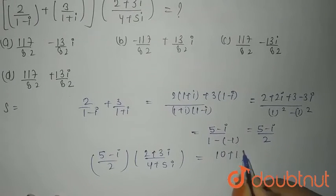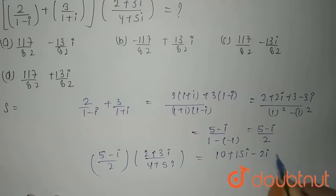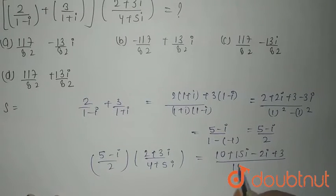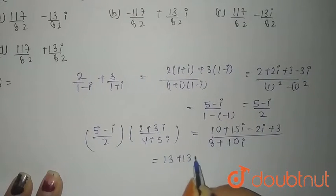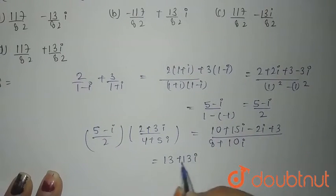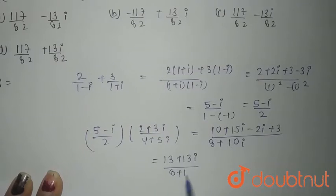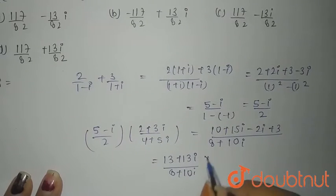Now multiplying it, you will have 10 plus 15 iota minus 2 iota plus 3 divided by 8 plus 10 iota. Now you will have 13 plus 13 iota, that means 10 plus 3, 15 minus 2 that is 13 and 8 plus 10 iota in divide.